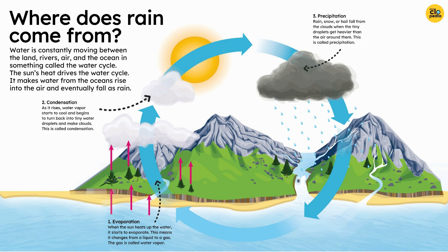3. Precipitation. Rain, snow, or hail fall from the clouds when the tiny droplets get heavier than the air around them. This is called precipitation.